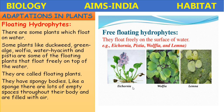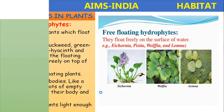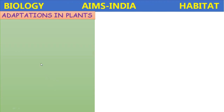These floating hydrophytes float freely on the surface of the water. Examples include Eichhornia, Pistia, Wolffia, and Lemna. The aerenchyma tissue makes the plants light enough to float.